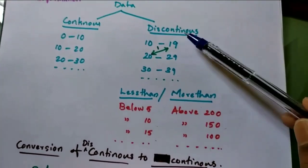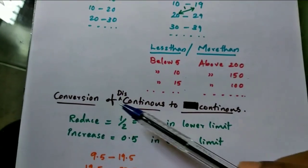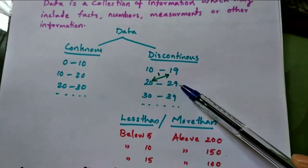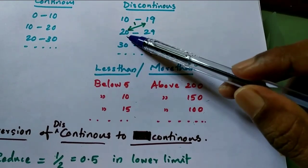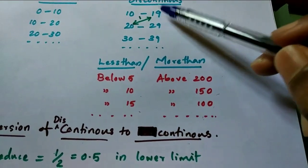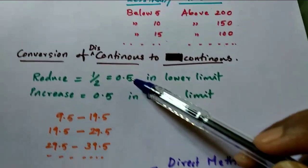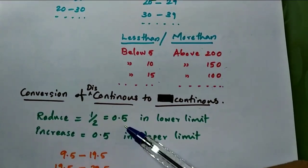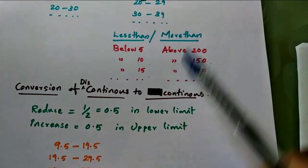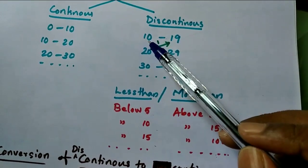First, we'll discuss conversion of discontinuous data into continuous. Take the difference between 19 and 20, which is 1, and divide by 2: 1/2 = 0.5. Reduce 0.5 in the lower limit of the first interval. The first number is 10, so 10 - 0.5 = 9.5.